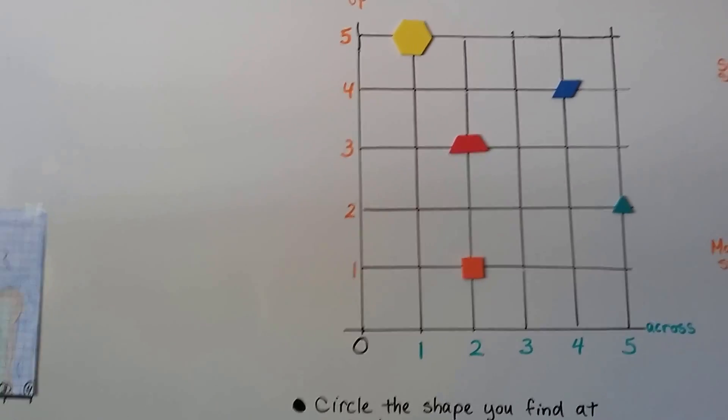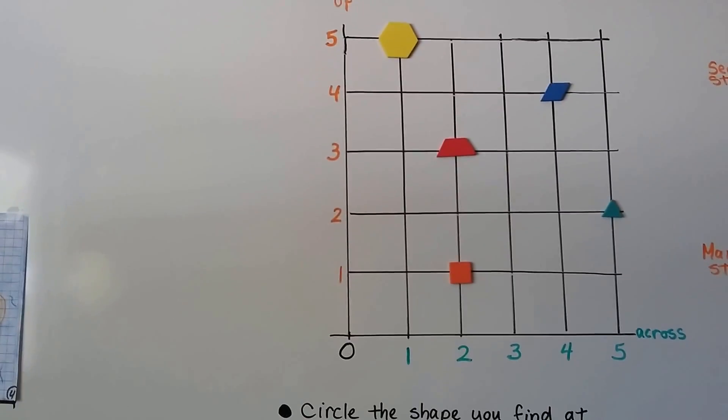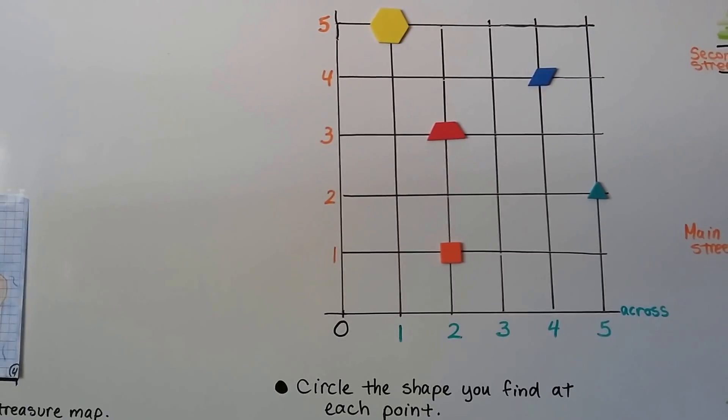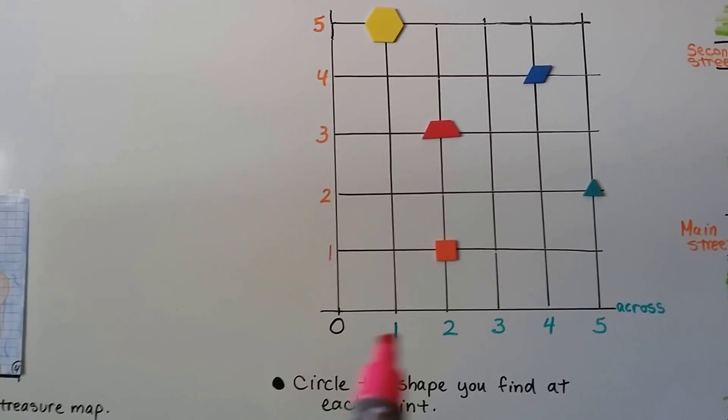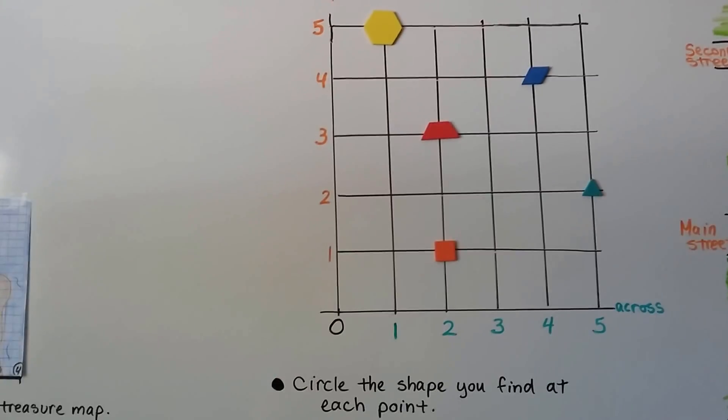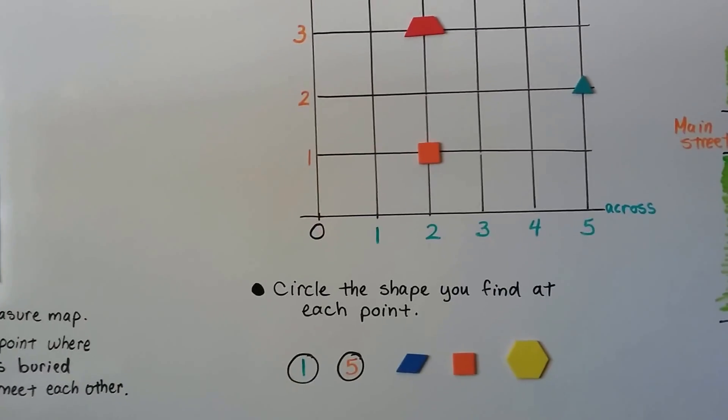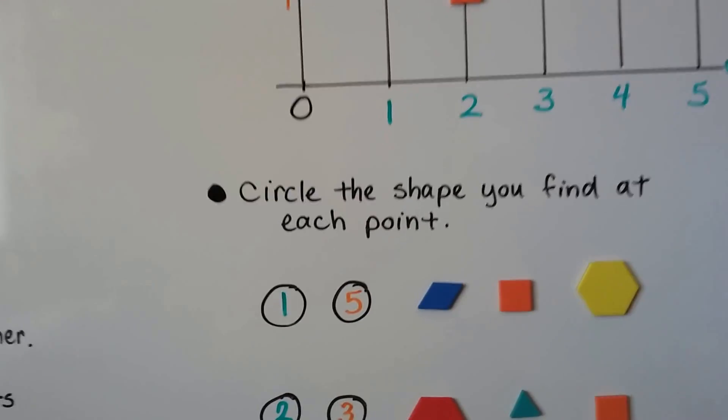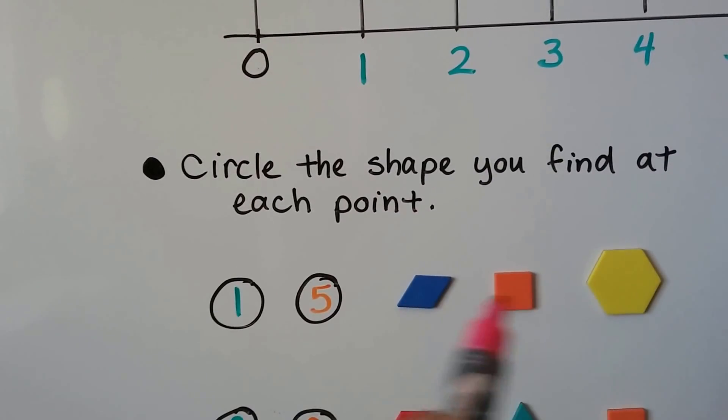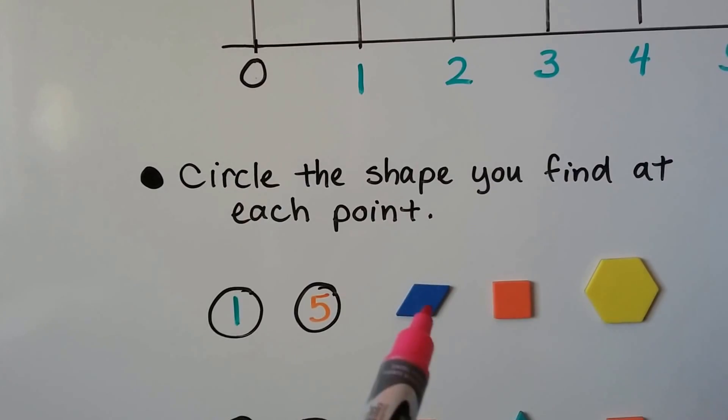Take a look at this grid. We have lots of shapes on this grid. We need to circle the shape we find at each point. Here we have our numbers going across in green and our numbers going up in orange. We need to find where the green 1 meets the orange 5 and figure out which one of these shapes is at that point.